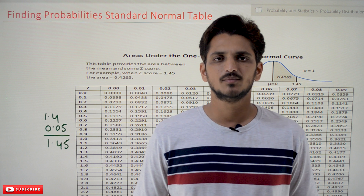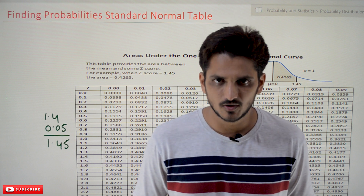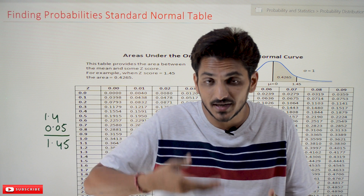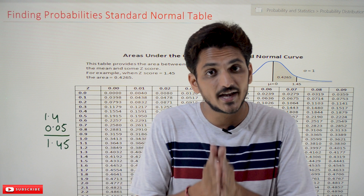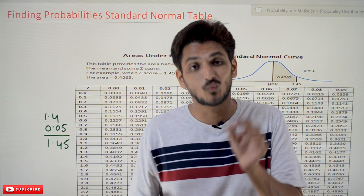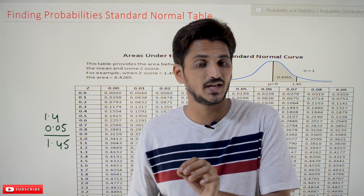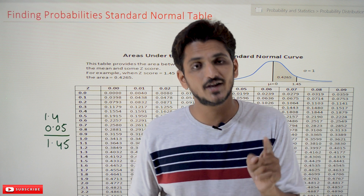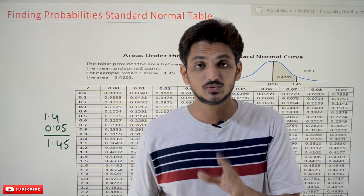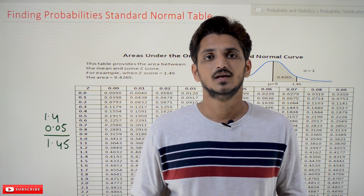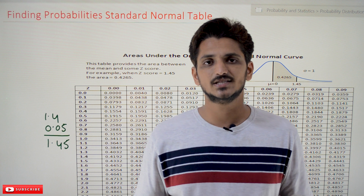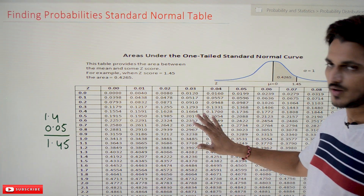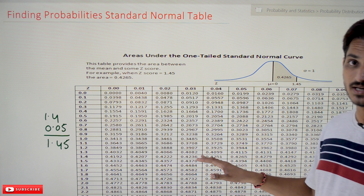Hi, welcome to Learning Monkey. I am Raghu. In this class we will discuss how to find probabilities from the standard normal table. The standard normal probability table was discussed in our last class when we discussed standard normal distribution — please watch that class and come back here. The link for the playlist is provided in the description below. Coming to today's class, this is the table provided for us to find the probabilities.